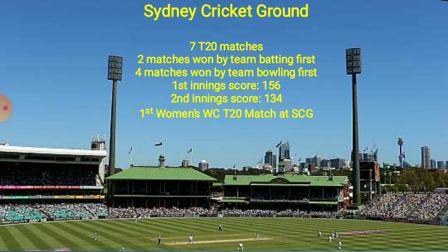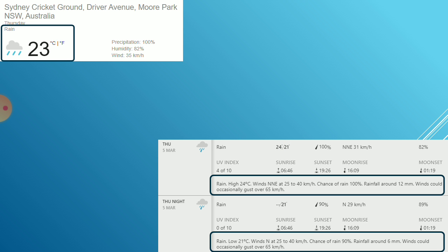The Sydney Cricket Ground surface typically offers more spin as the season goes on. However, the amount of rain around the city this week may bring in some moisture and bring grass into play, which could mean seamers could also have a good day. Overall it's a decent wicket to bat on, so whoever wins the toss would ideally want to bat first. The weather forecast is not a good one — rain is expected throughout the day with some dry patches, and it will be a miracle if we get a full game.